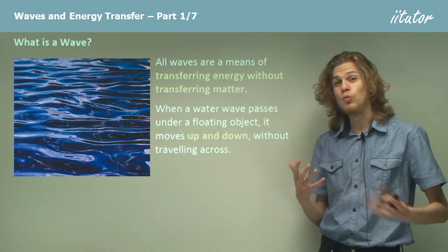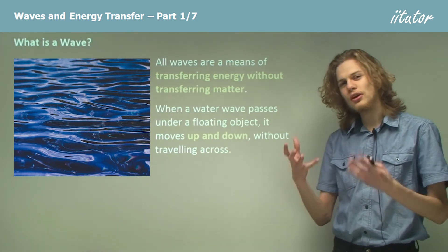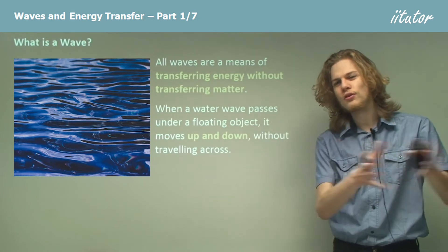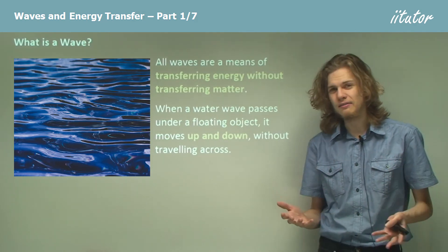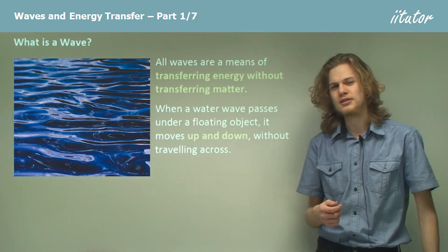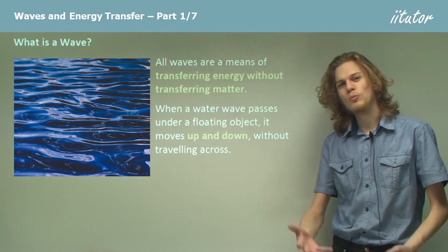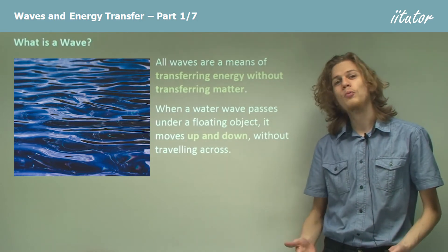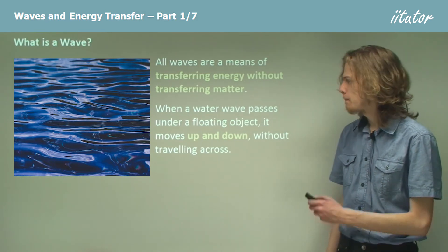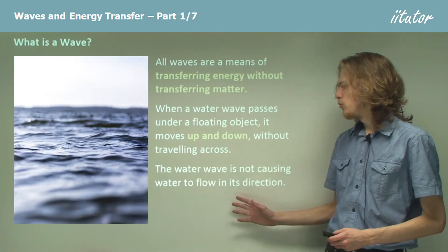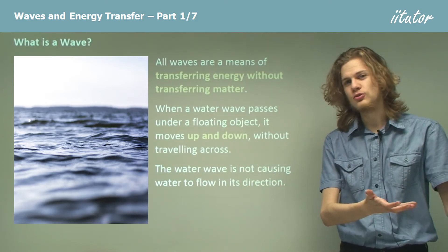If we look at a water wave passing across a few things floating on top, we'll notice that most of the time the things on top don't actually move in the same direction as the wave — they just bob up and down as the wave goes underneath. If we look at objects floating on top of the water, like these ducks, we can see that they'll move up and down and bob on top of the water as the wave goes past, instead of being carried off by the wave. So the water wave is not causing the water particles to move in the same direction as the wave; it is simply causing them to move up and down as the wave passes.